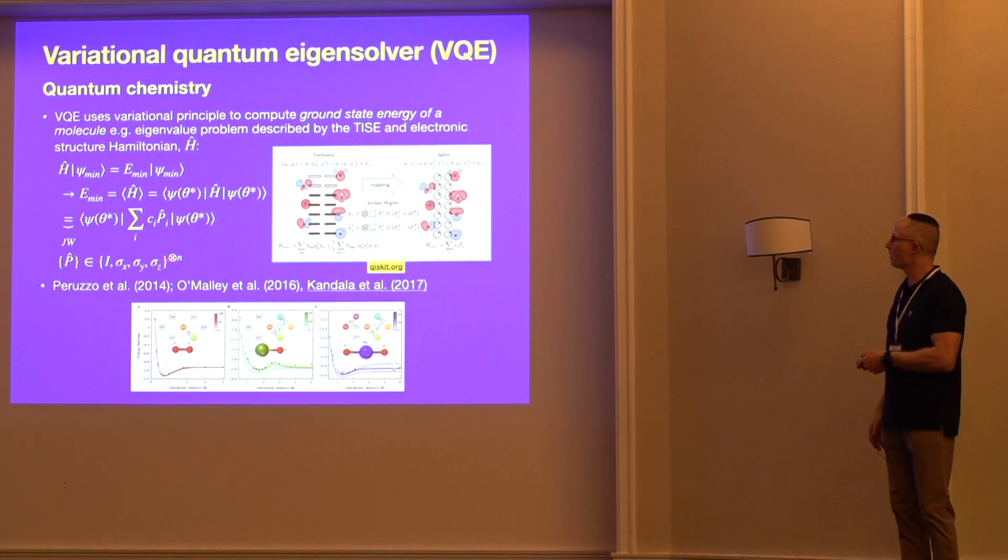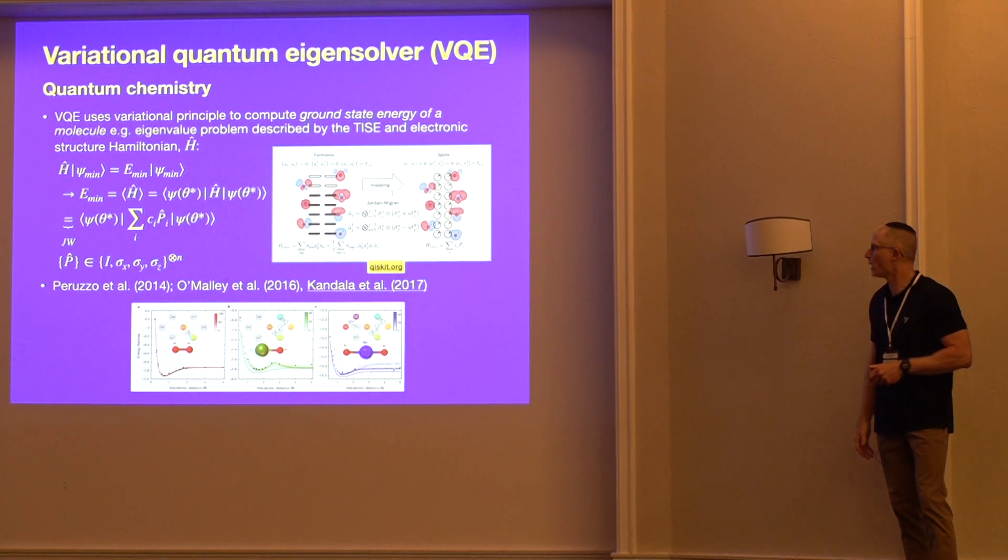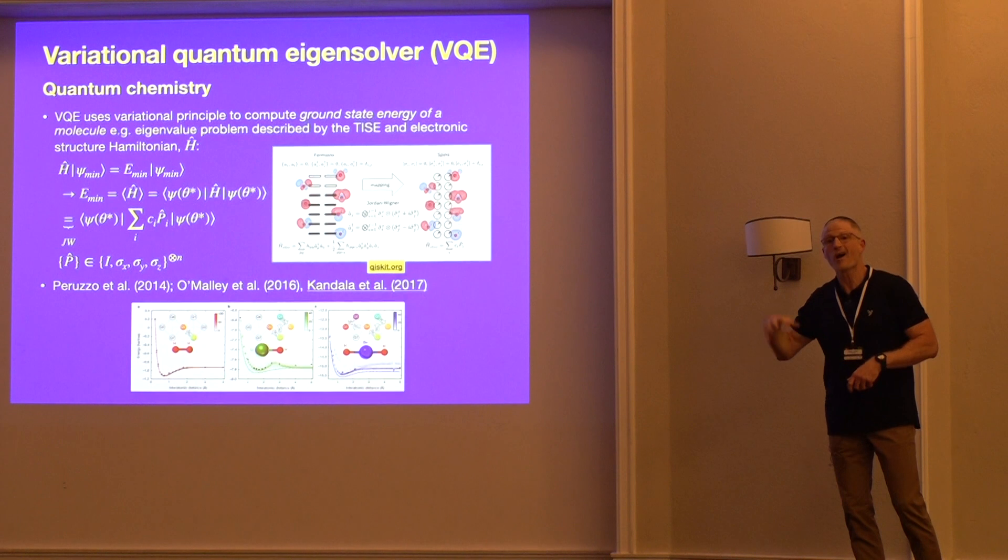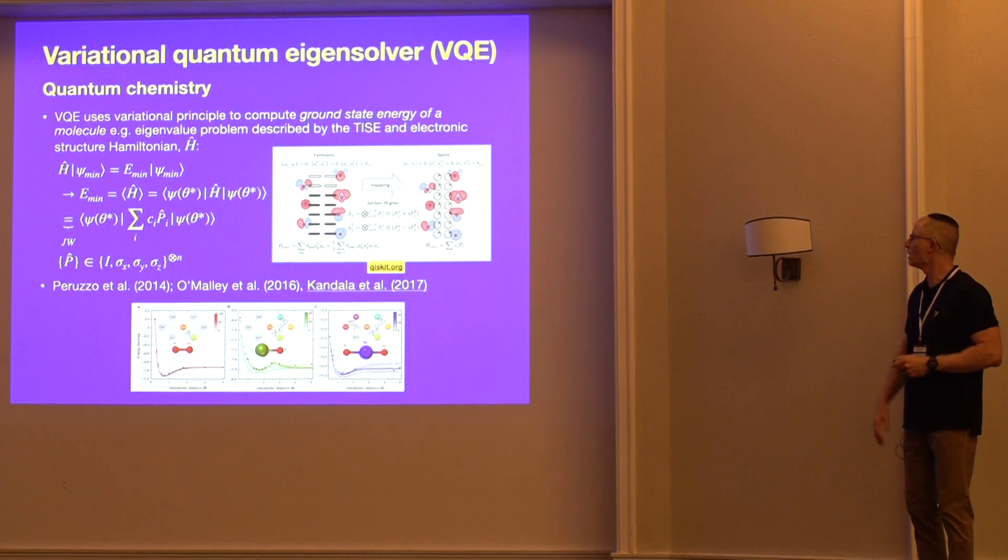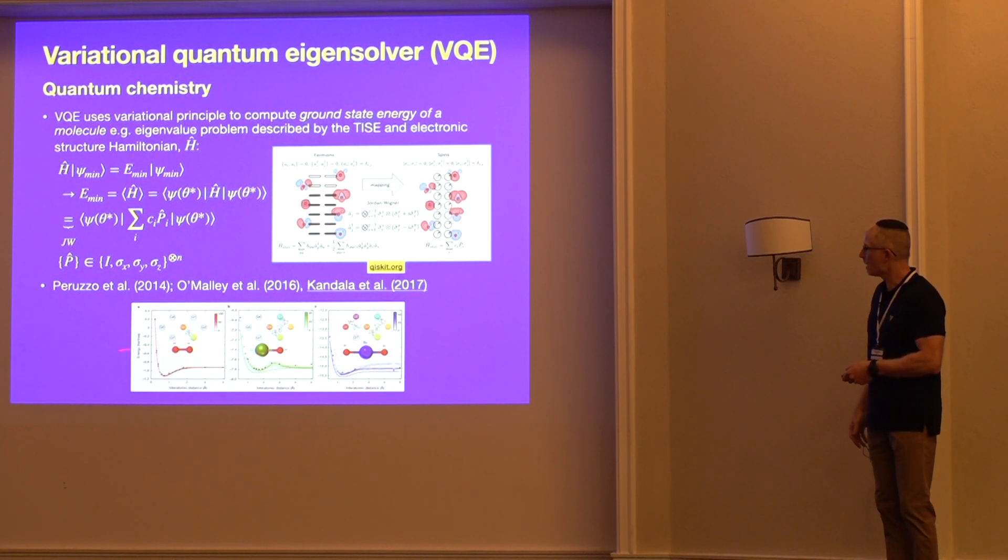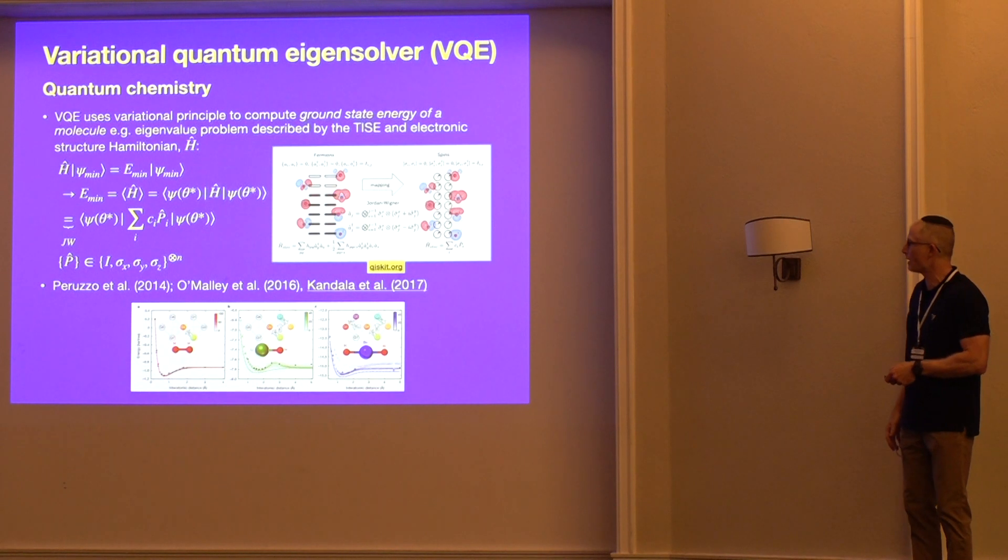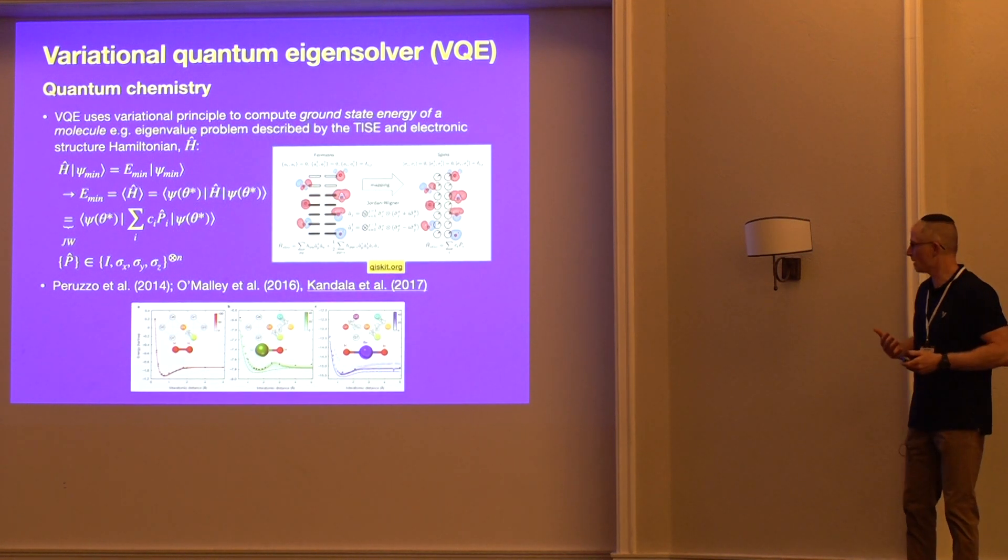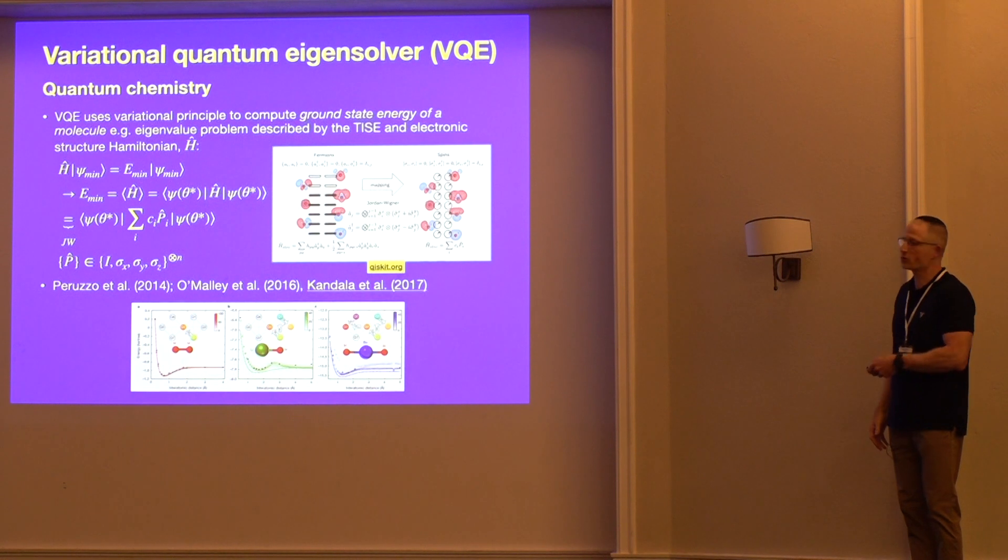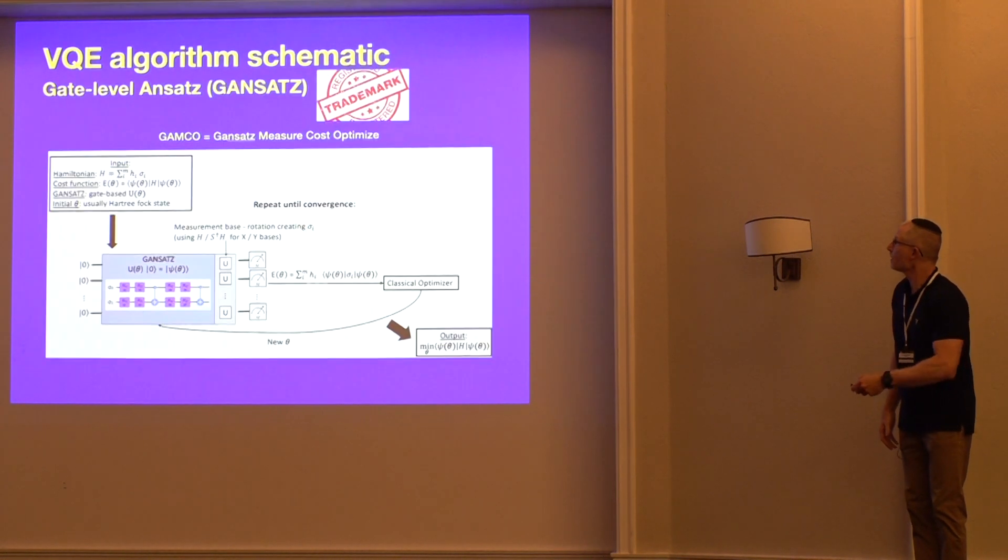This was first presented in a paper in 2014 by Peruzzo et al. It was followed up by another very important paper by O'Malley, and then Kandala et al. in 2017 had the first implementation of VQE on a hardware-efficient ansatz. That really opened the game up for everybody and anybody to apply this algorithm. This is the picture, probably the most famous picture, that comes from the paper showing the ground state energy versus the interatomic distance for several different molecules showing the VQE predictions versus the exact solution, based on the full configuration interaction model. We're going to see this picture a lot in the next part of the talk.